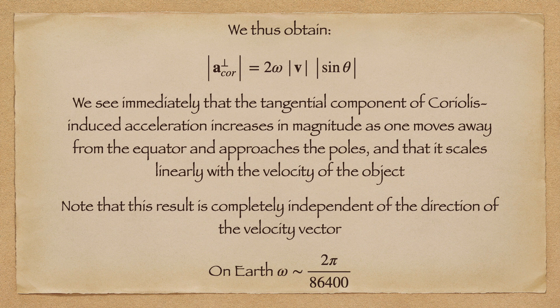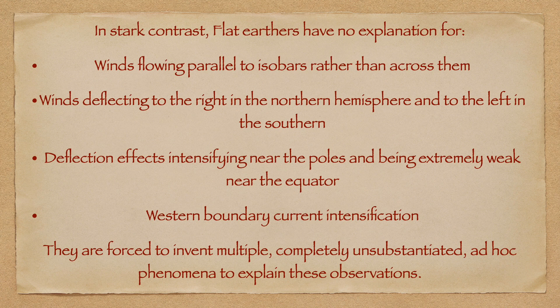Thus, without any manipulation or forcing or introduction of new variables, Coriolis explains each and every observable facet of the deflection effect that influences objects on Earth. In stark contrast to the elegant simplicity with which Coriolis explains our observational data, flat earthers have no explanation for any of them. They can't explain why winds flow parallel to isobars rather than perpendicular to them. They can't explain why winds deflect to the right in the Northern Hemisphere and to the left in the Southern. They can't explain why deflection effects intensify near the poles while being extremely weak near the equator, nor do they have any explanation for the intensification of Western boundary currents in ocean gyres. Instead, they fall back on that old flat Earth standby of making things up, inventing multiple completely unsubstantiated phenomena to try and explain away these observations — none of which has any observational support.